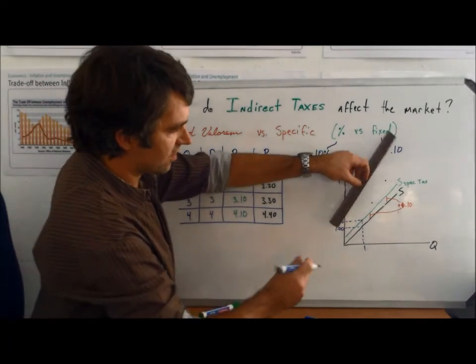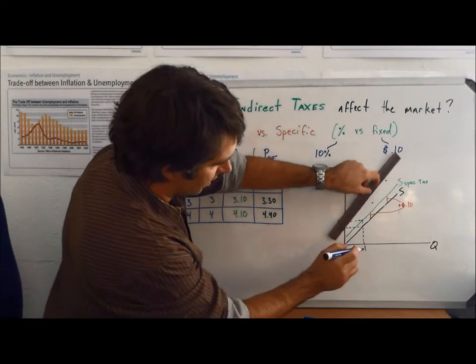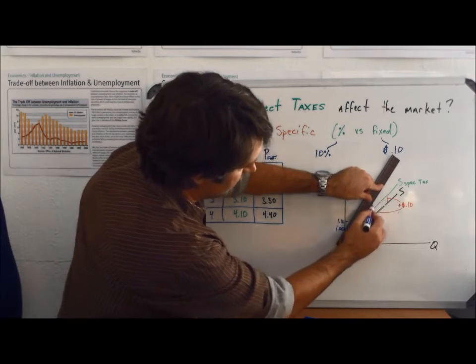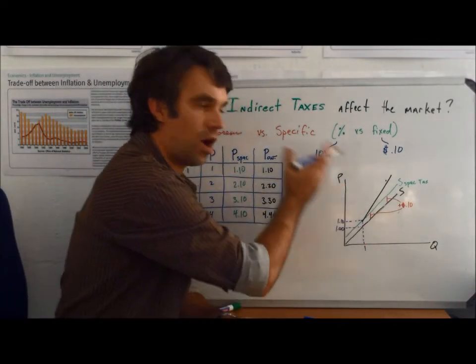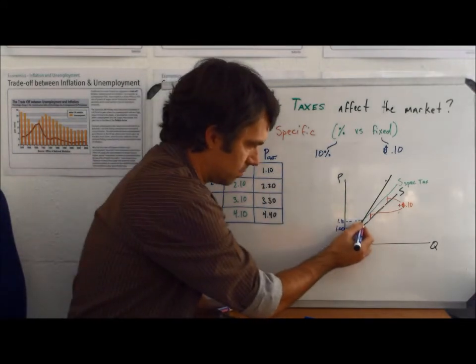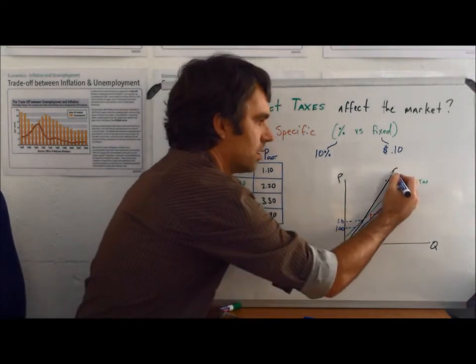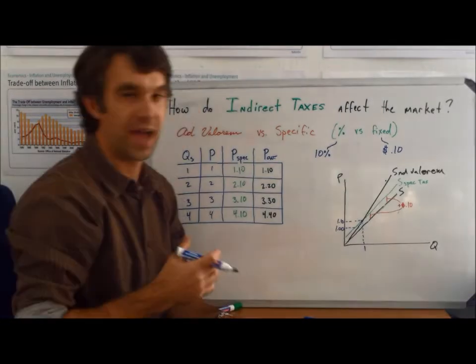So the effect of this is going to be not a shift of the supply curve, but in fact what will happen is that the supply curve will become more steep all along its length. So this would be supply with an ad valorem tax.